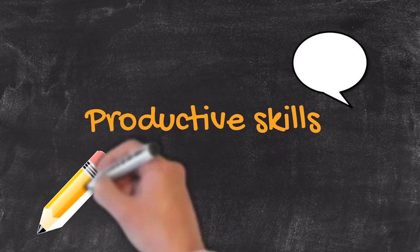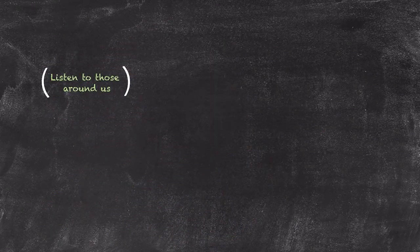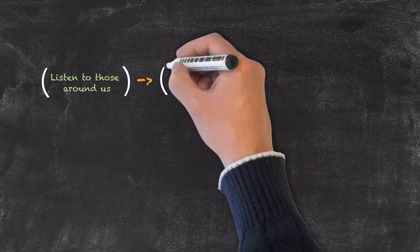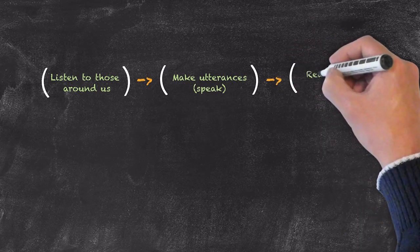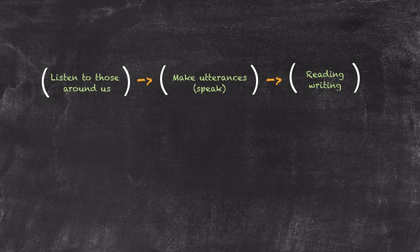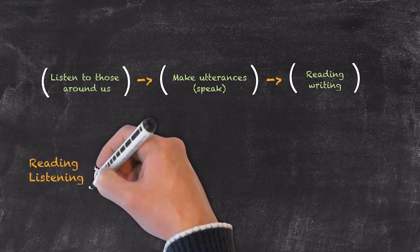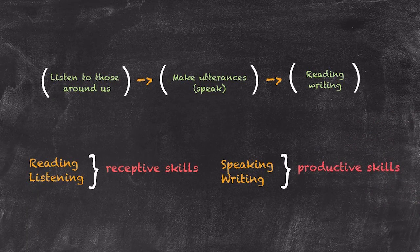To start with, if we think about the way in which you learnt your first language, most of us go through a particular process. Firstly, we listen to those around us. After that first silent period of listening to other people, we then start to make utterances. Having learnt to speak, to a certain extent at least, we then go on to learn how to read and to write. This process covers the four skills we're trying to teach our English students: listening, speaking, reading, and writing. If we group those skills into their different types, reading and listening are known as receptive skills, whereas speaking and writing are known as productive skills. In this session, we're going to focus on the productive skills and have a look at how to create a lesson for that.